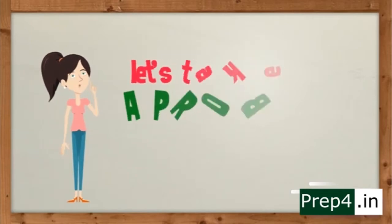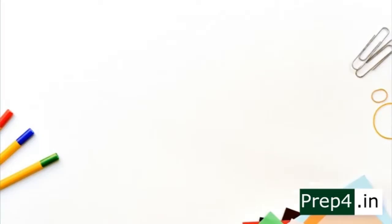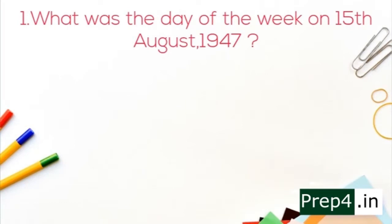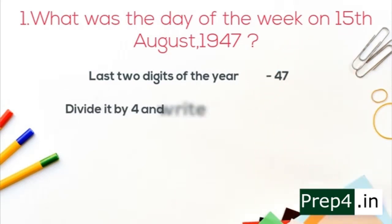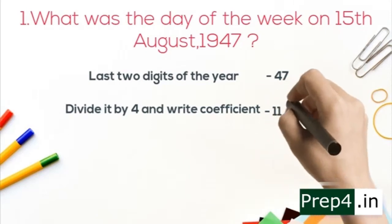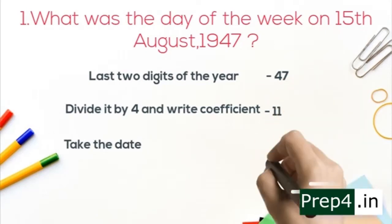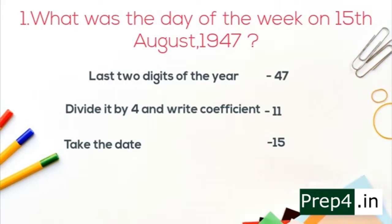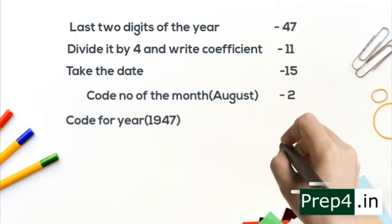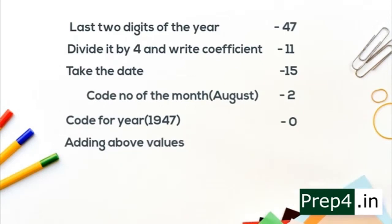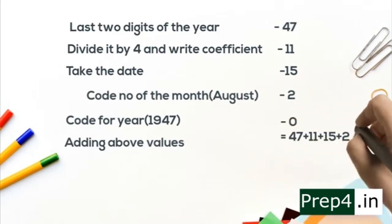Our question is: What was the day of the week on 15th August 1947? So first, take last two digits of the year, that is 47. Then divide it by 4 and write quotient, which is 11. Take the date, that is 15. Then take the code number of the month, which is 2. Then code for the year 1947, that is 0. So adding all values: 47 plus 11 plus 15 plus 2, we get 75.